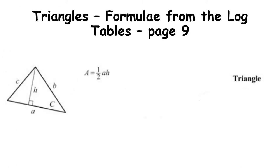Now let's talk about triangles. On page nine of the log tables there are several triangle formulae; the one we focus on is Area = ½ × a × h, where a is the base and h is the perpendicular height. The perpendicular height is special — it meets the base at a right angle, shown by the small square symbol.